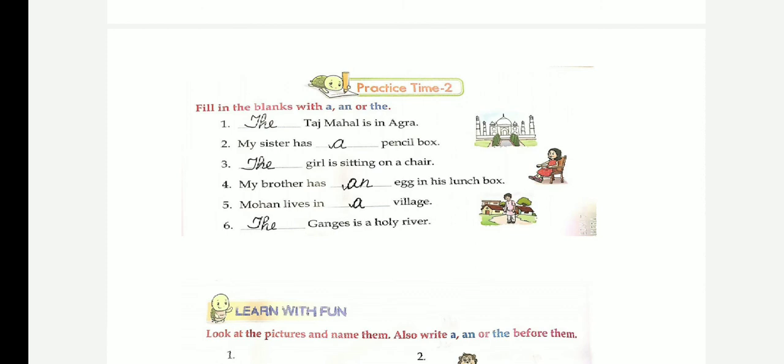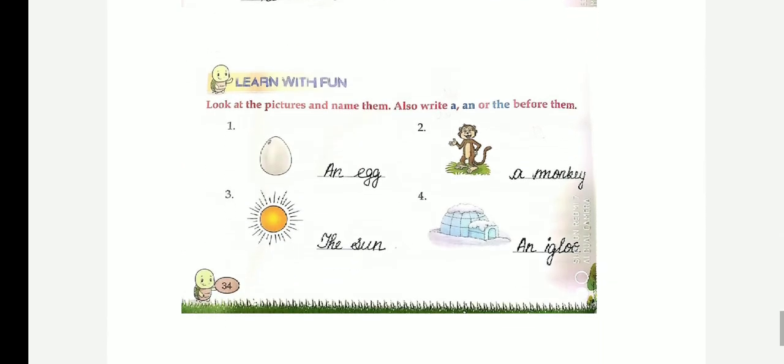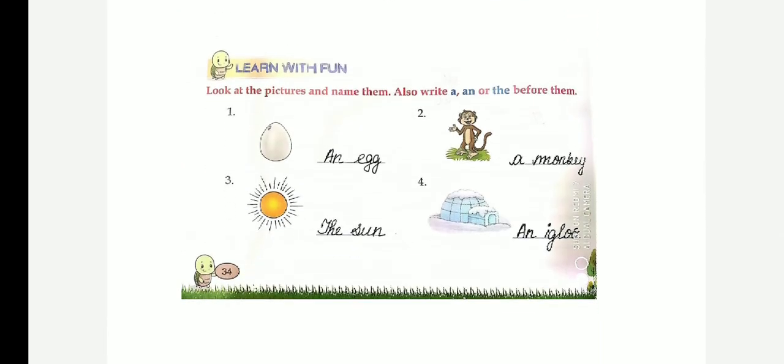Okay, next one. Learn with fun. Look at the pictures and name them. Also write 'a', 'an', or 'the' before them. An egg. Look at the first picture, egg. Egg, E, vowel sound, so we use 'an', an egg. Next one, a monkey. M, consonant.